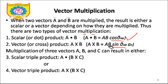So A̅ cross B̅ = AB sin(θ_AB), and the most important thing is this â_n (n-hat). What is this â_n? It indicates the unique normal vector perpendicular to the plane containing A̅ and B̅.